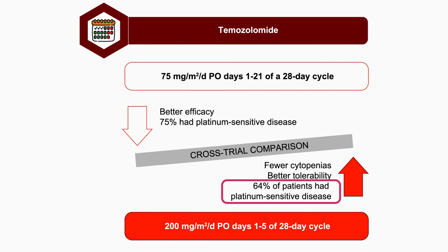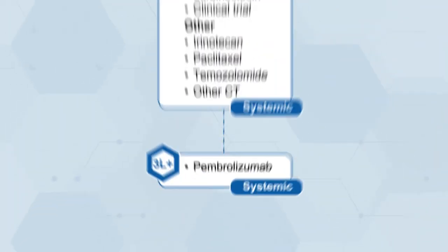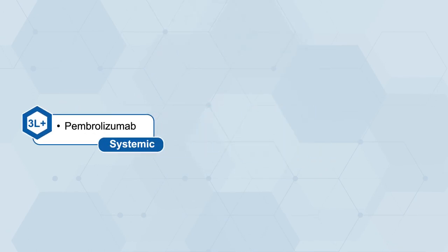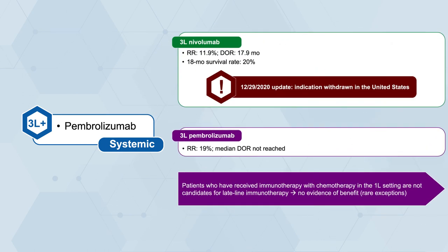It's important to note that patients who received platinum-etoposide plus atezolizumab or durvalumab are not good candidates for later-line checkpoint inhibitors at progression. Many patients are now being treated with checkpoint inhibitors in the frontline setting, making nivolumab or pembrolizumab less compelling options at progression. In patients who have progressed on a checkpoint inhibitor, there is no evidence of benefit from a later checkpoint inhibitor, with the exception of rare patient-specific scenarios.